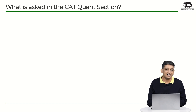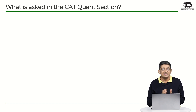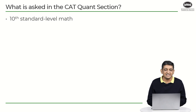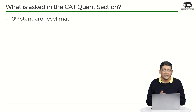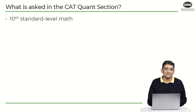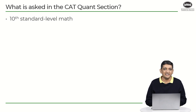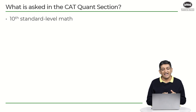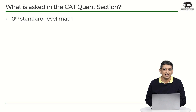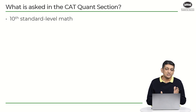The first thing to understand is what exactly is asked in the CAT quant section. Broadly, the entire section is 10th standard level math, meaning that if the CAT paper were presented to a 10th standard student, that student would be able to make sense of the entire question paper. You have taken your 10th standard exams, so you should be able to make sense of the CAT quant section as well — but the problem is you are not able to come up with solutions on your own.